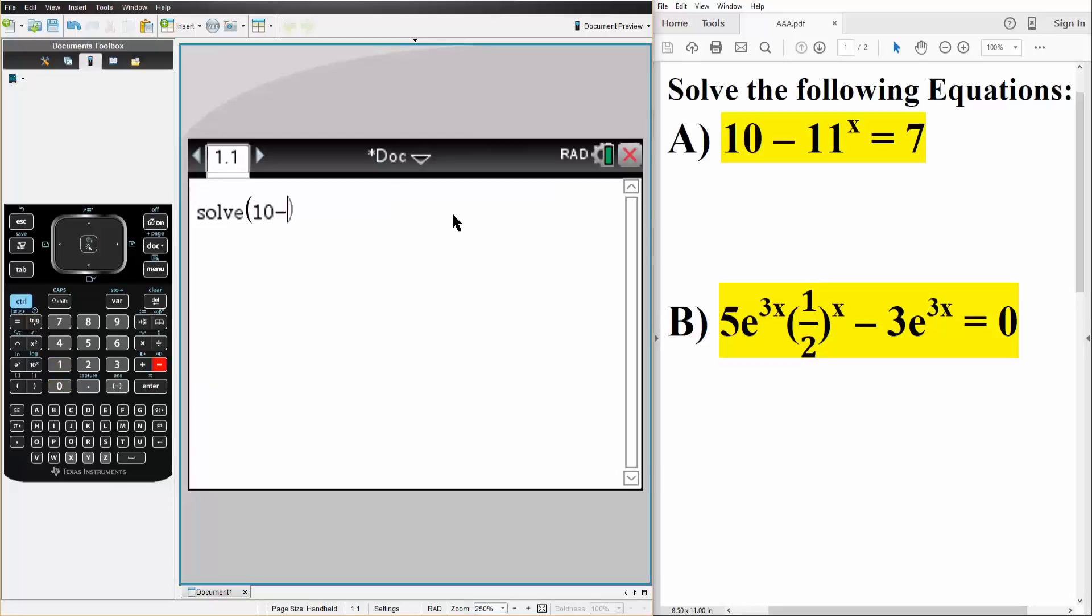and now we write our equation. So 10 minus 11 raised to x, and this is going to equal 7. Now the important step next is to write comma x like this,